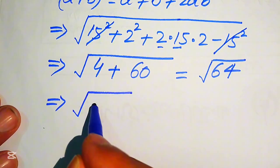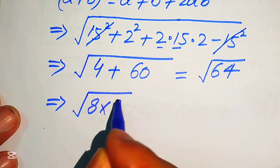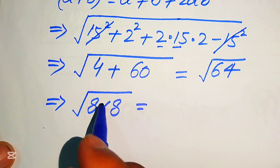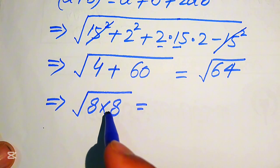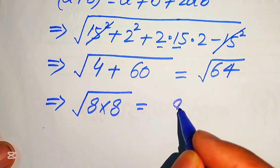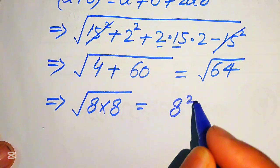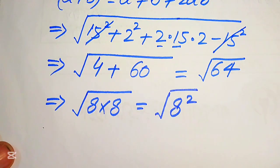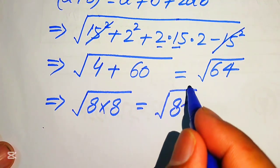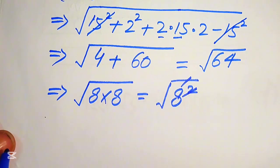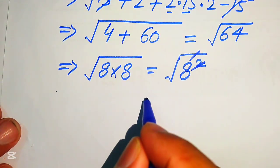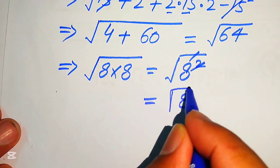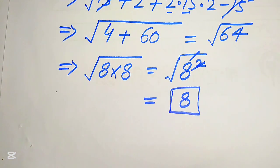We rewrite 64 as 8 multiplied by 8 under the square root, or in other words as the square root of 8 squared. The squared and the square root cancel each other out, and we obtain 8.